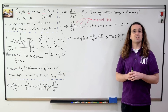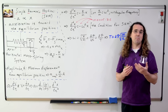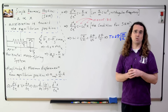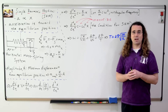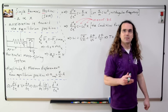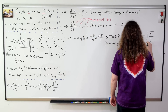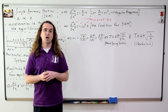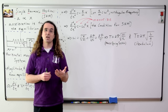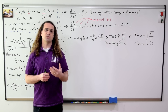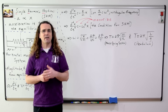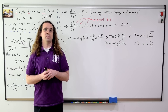Solving for the period gives us the period of a mass-spring system, which does appear on the AP equation sheet. I definitely recommend you know and understand this derivation. In addition, you should know and understand the derivation of the period of a pendulum, which is equal to 2π times the square root of the length of the pendulum divided by the acceleration due to gravity.